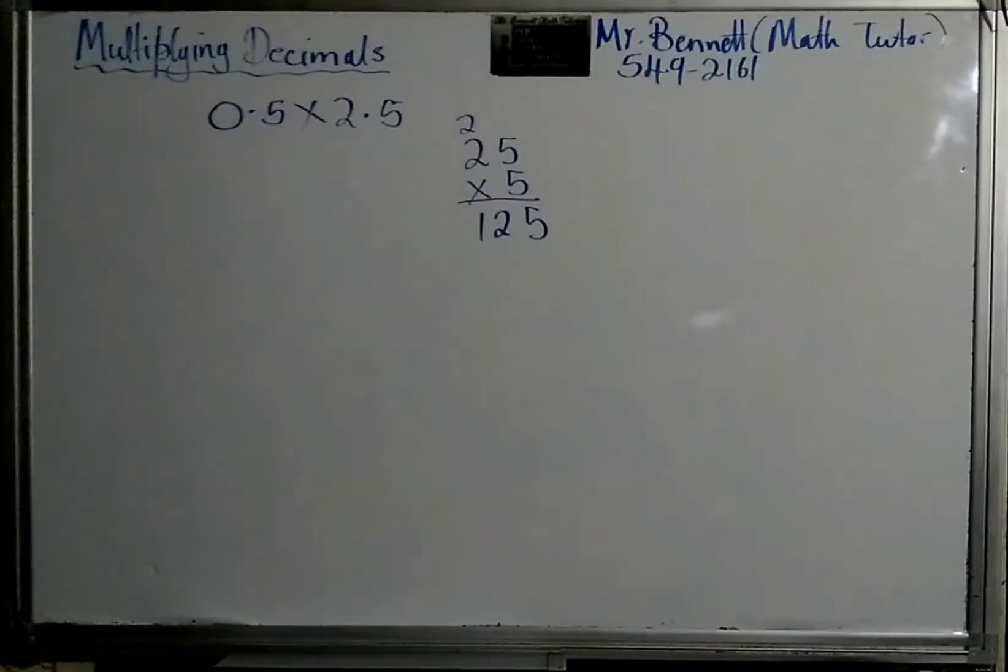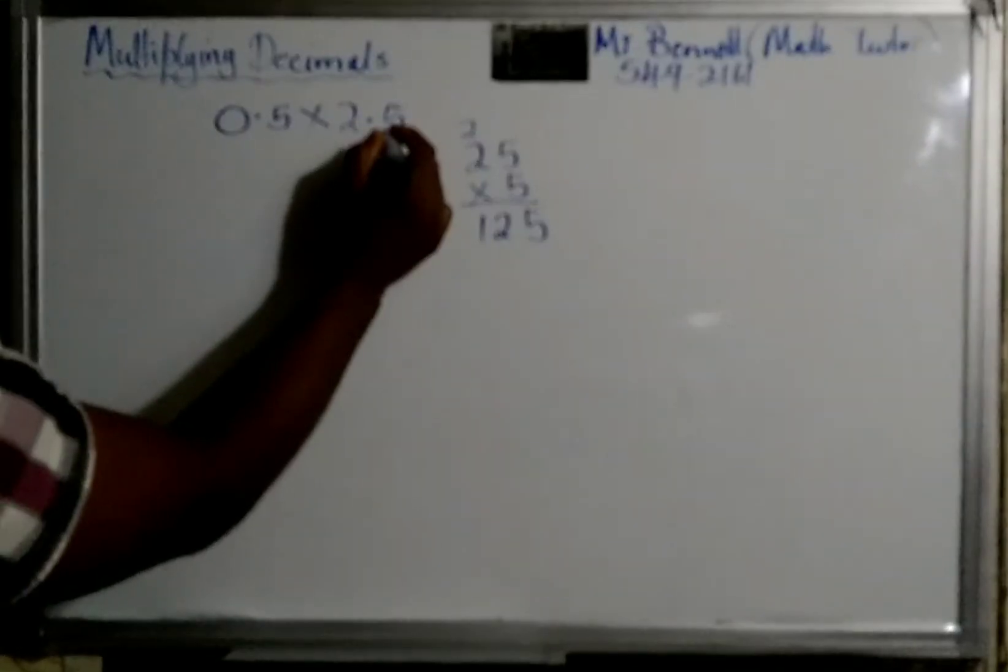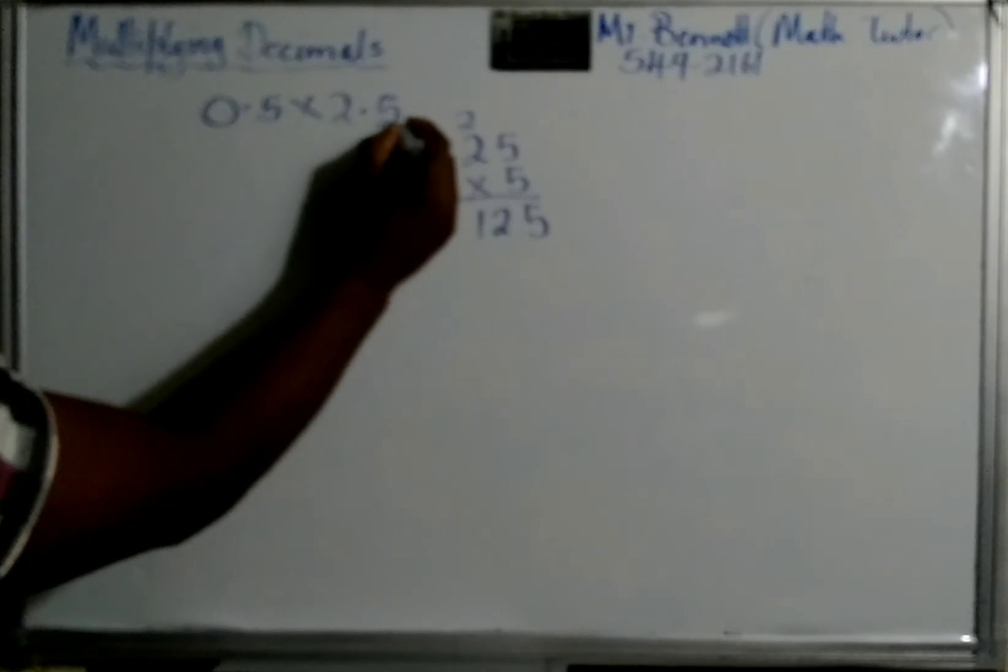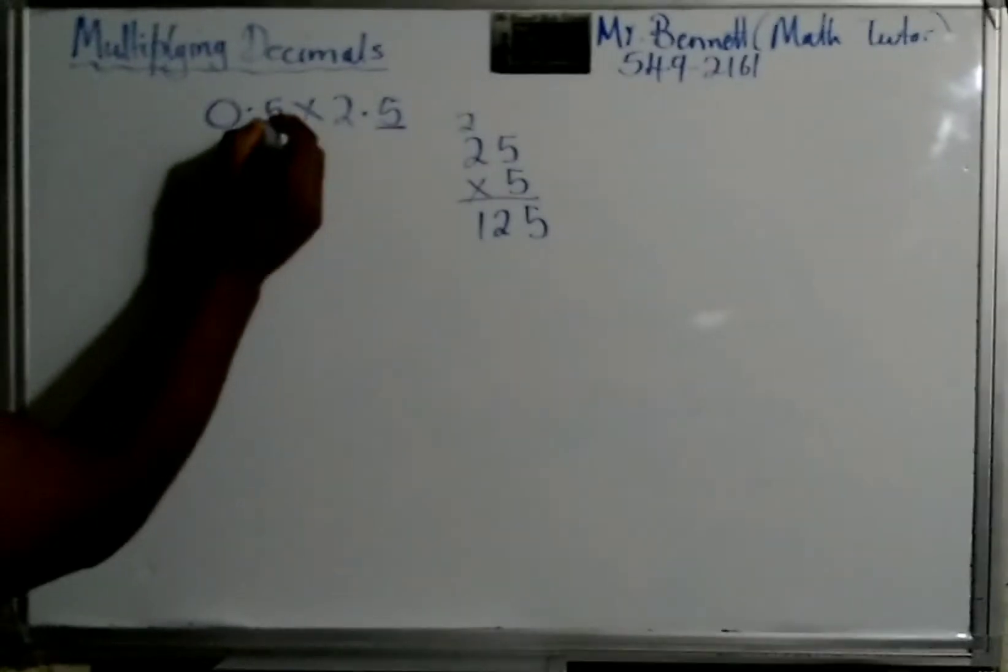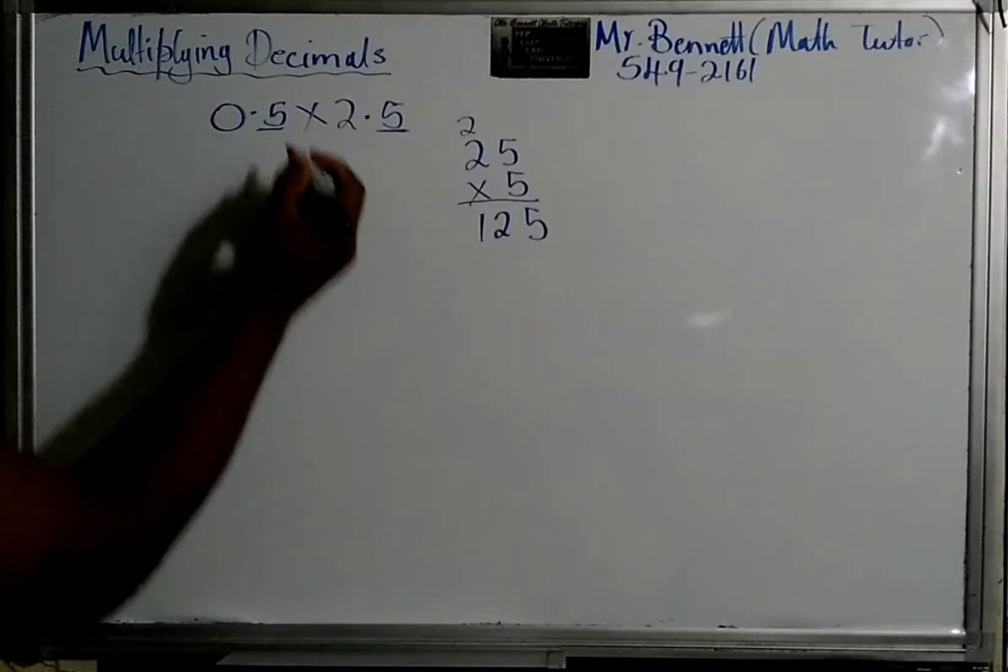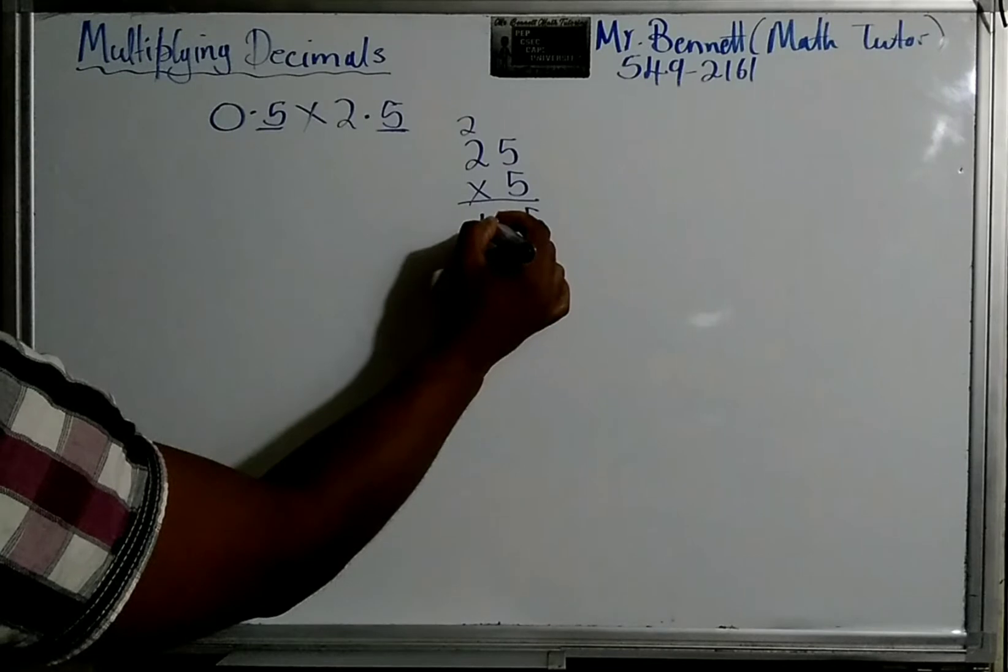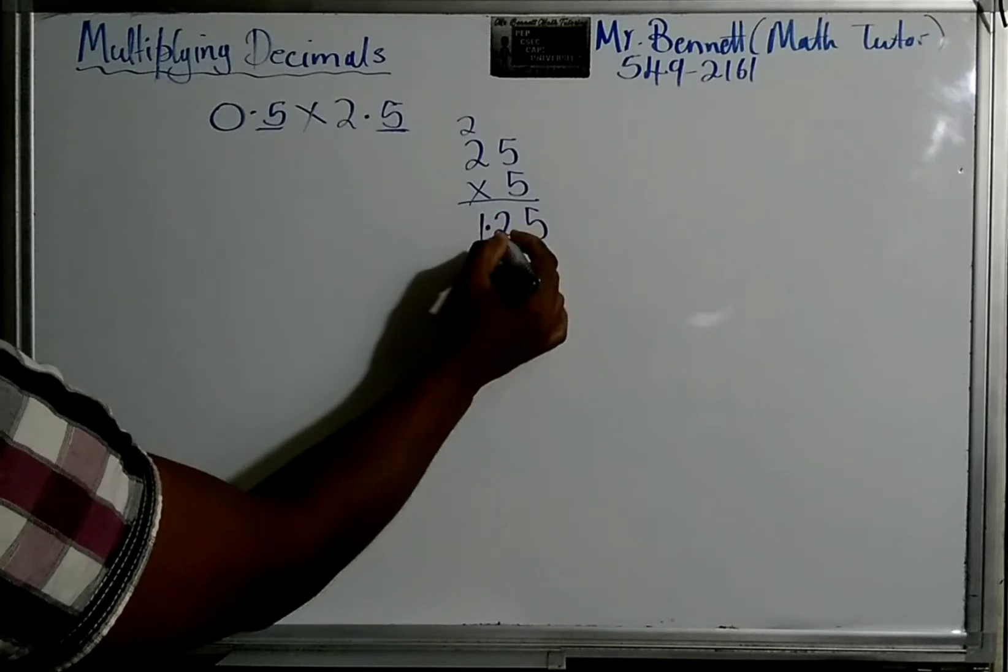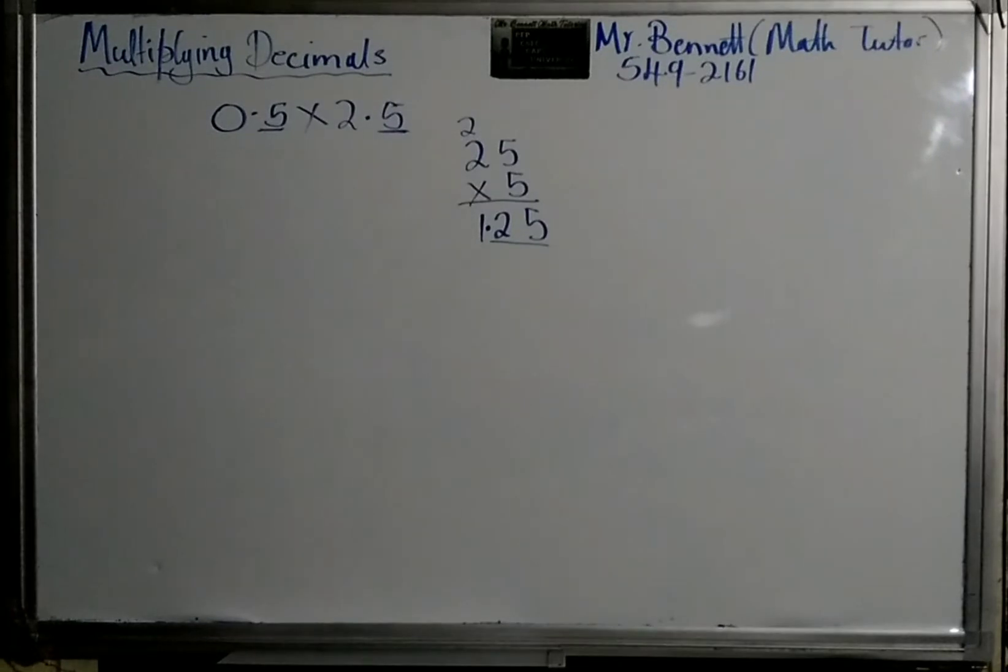Now, what you will do after is to count the number of decimal places, the total number of decimal places. So here we have one decimal place because after the decimal point, one number. And this, 2. So starting from here, we say 1, 2. So this, you will have two decimal places. So the answer would be 1.25.